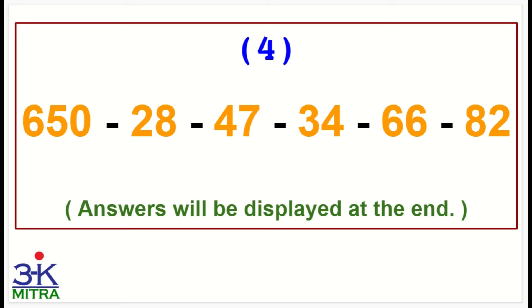Let's move to the fifth sum now. Again, 650 as the starting number. Minus 48, minus 65, minus 27, minus 39, and last number minus 77. That is, write down the answer.